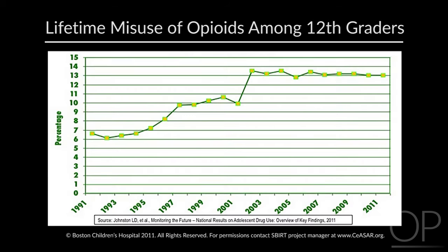This graph shows lifetime misuse of opioids amongst 12th graders in high school. This is from the Monitoring the Future study, which surveys adolescents in 8th, 10th, and 12th grades in a nationally representative sample. We can see that from 1991 through 2011, there was a dramatic increase in misuse of opioids.